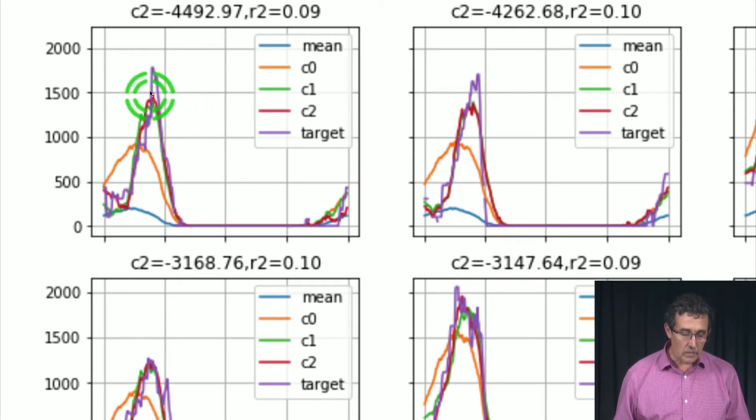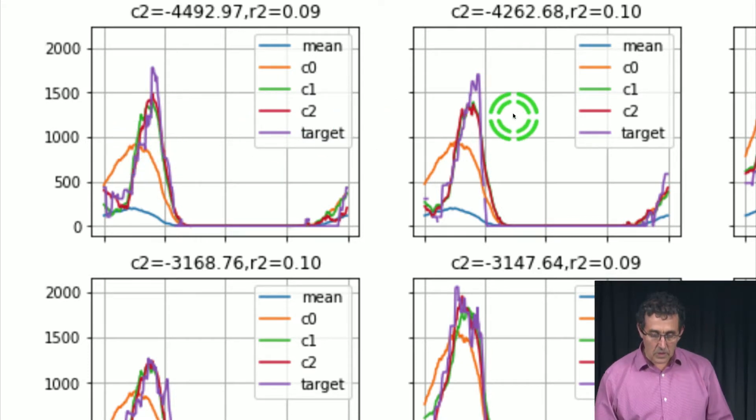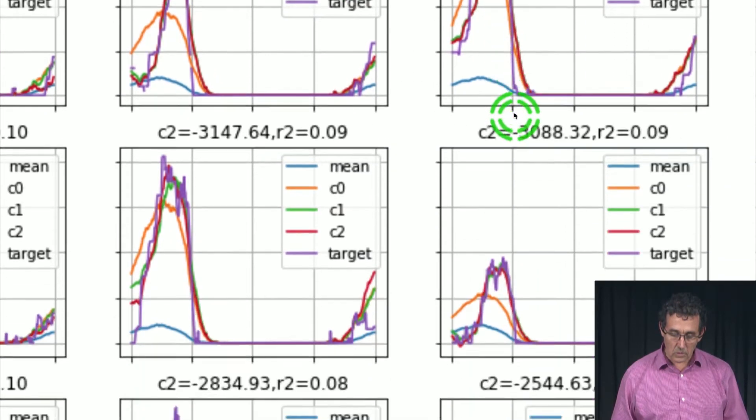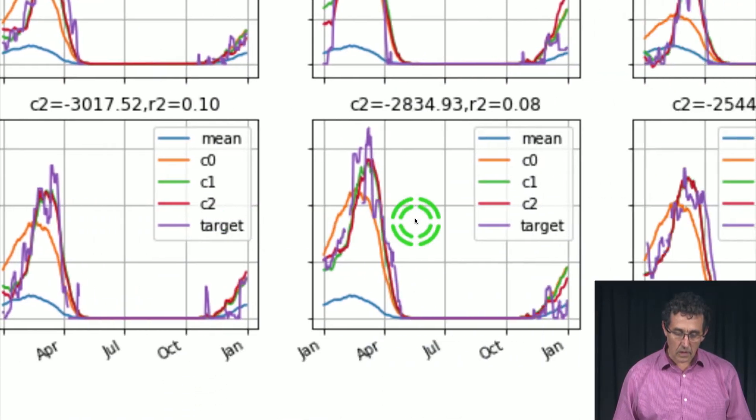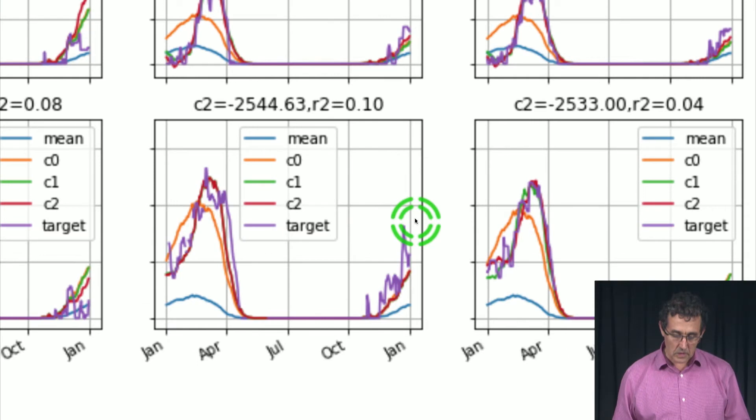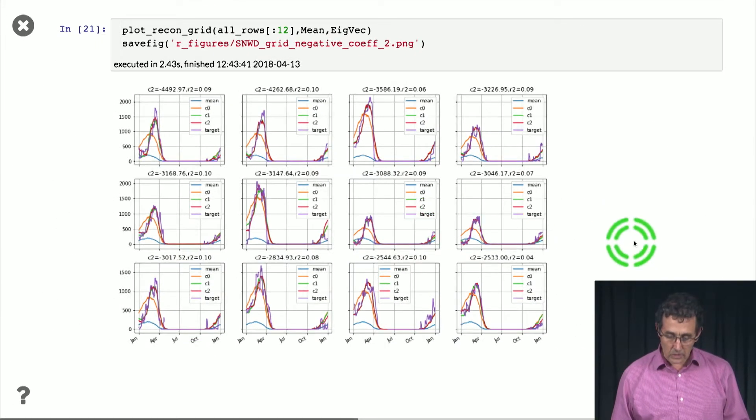And this one still keeps the maximum around here. But when we add the C2, what you see is that it pushes the season, the peak of the season, to be later. And if you look at the target, which is the actual measurement, you see that's really how it is. So the target is to the right of the general mean. And this is something you'd see in all of them. So in all of those, you see that these are years that have a late snow season. So that gives us a little bit of confidence that this is really what is going on.